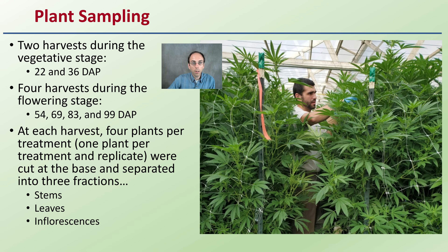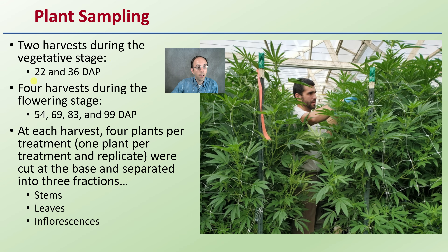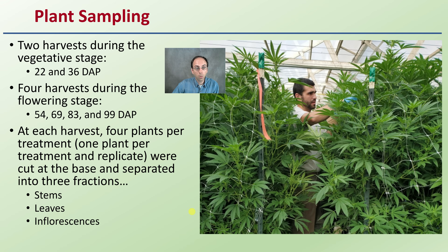For plant sampling, two harvests were done during the vegetative stage at days 22 and 36 after planting, and four harvests during the flowering stage at days 54, 69, 83, and 99. At each harvest, four plants per treatment were cut at the base and separated into three sections: stems, leaves, and inflorescence.